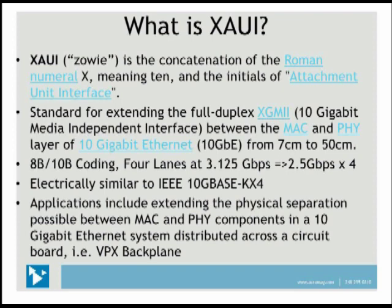It's a standard for extending the full duplex 10 gigabit media independent interface, which extends between the MAC and the PHY layer of 10 gigabit Ethernet, and it extends that from 7 centimeters up to about 50 centimeters. The standard 8B/10B coding is used. There are four lanes involved in a XAUI connection, and each of those lanes is running at 3.125 gigabits per second.